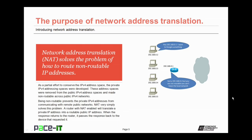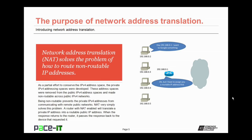Network Address Translation, or NAT, solves a very serious problem of how to route non-routable IP addresses. As a partial effort to conserve the IPv4 address space, the private IPv4 addressing spaces were developed. These address spaces were removed from the public IPv4 address space and made non-routable across public IPv4 networks, and this led to the problem. Being non-routable prevents that private IPv4 address from communicating with remote public networks. NAT very simply solves this problem.